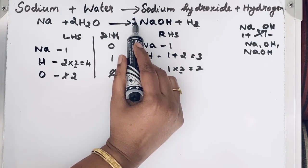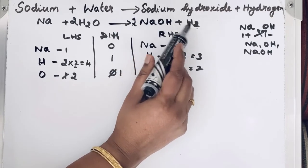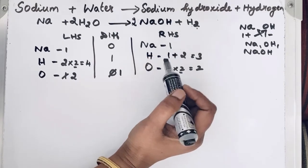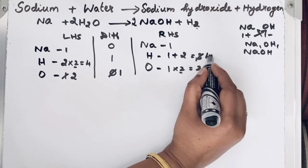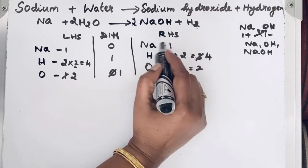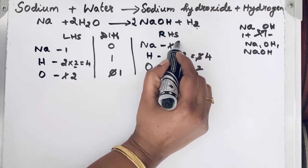Now, for hydrogen, here 2, then here also 2. So 2 plus 2, 4. So this 3, we cut and write 4. For sodium, also changing into 2.